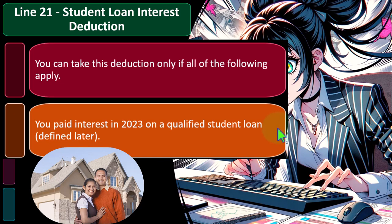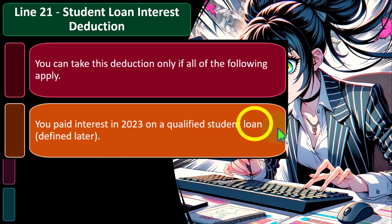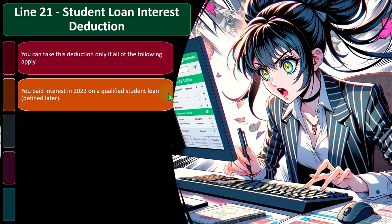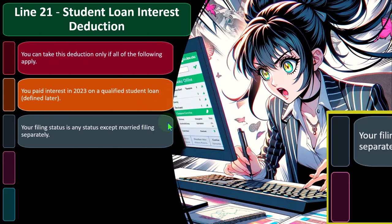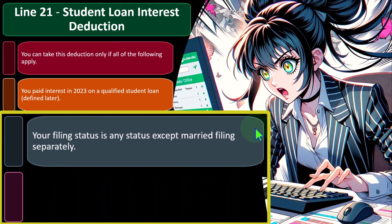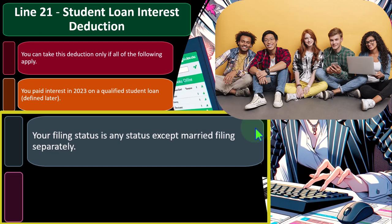The same thing is happening here: we take the loans out and when you pay back the loan, possibly you get a benefit by being able to deduct the interest on the loan — this time as an above-the-line deduction. To do that, you would have had to have a loan that qualifies as a student loan, so the question comes up: what qualifies as a student loan?